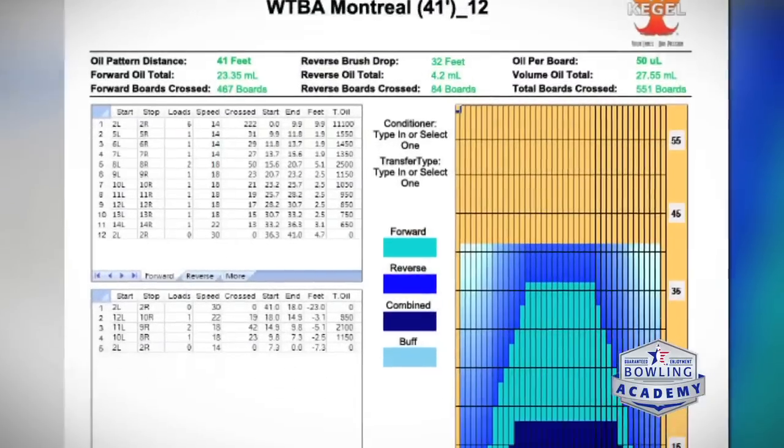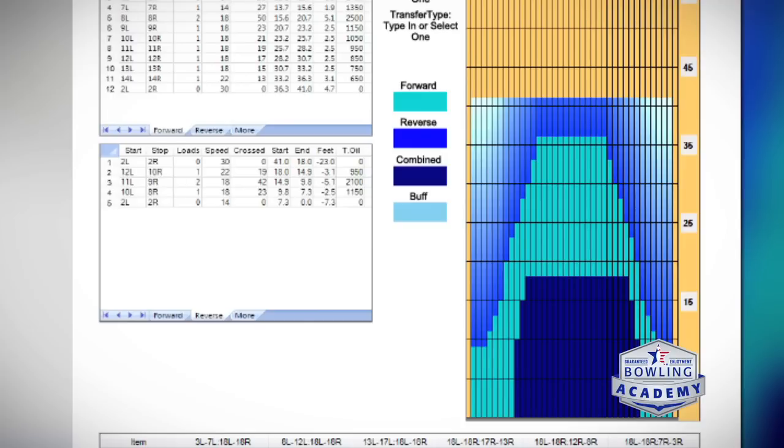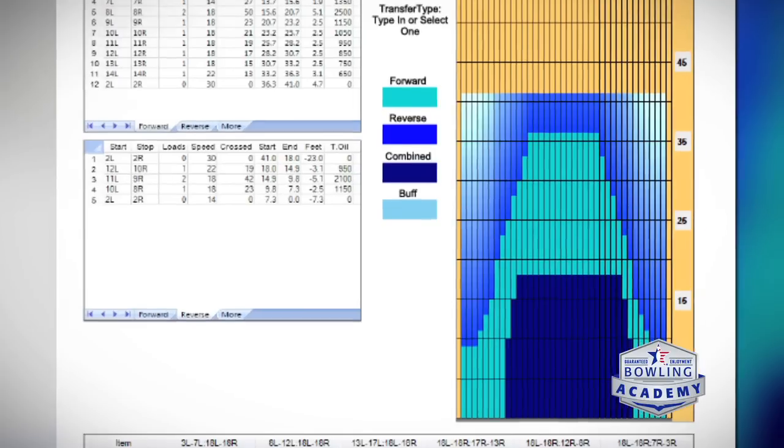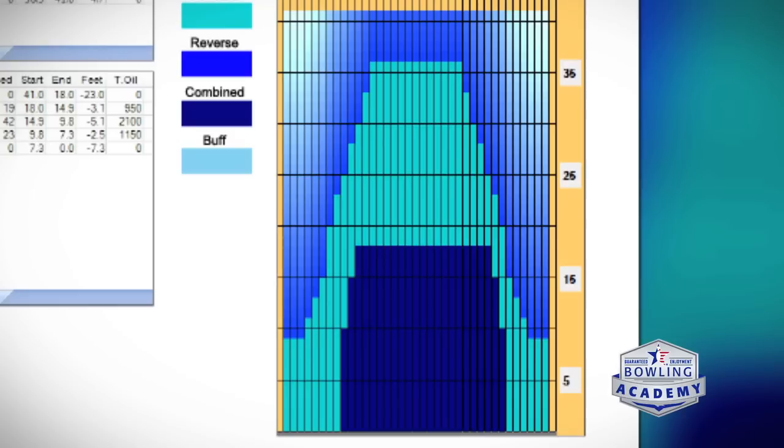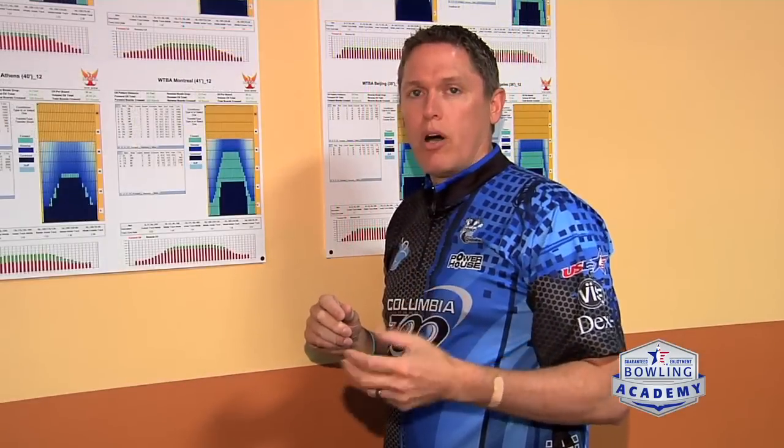And what you'll notice is, this is stretched out over five more feet. The end result is, there's going to be more friction in the front of the lane, and you're going to feel like you have a lot more oil in the mid lane. So, you may not be able to use as much surface, but you'll end up using lower RG balls and using less ball speed to get the ball to pick up.